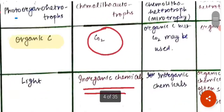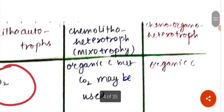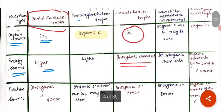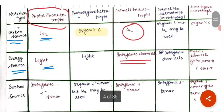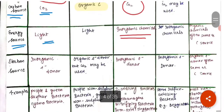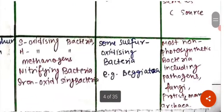The last category is chemo-organoheterotrophs. They use organic carbon as the carbon source and organic chemicals — often the same compound as the carbon source — as the energy source. Organic electron donors, often the same as the carbon source, also act as the electron source. Examples include most non-photosynthetic bacteria, including pathogens, fungi, protists, and many archaea.